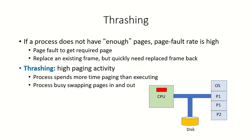In the video on frame allocation, we have seen that there should be a minimum number of frames which should be allocated to a process. Now if the process does not have enough frames, then the page fault rate will become high, because it is not having the required number of frames which are needed for its execution.